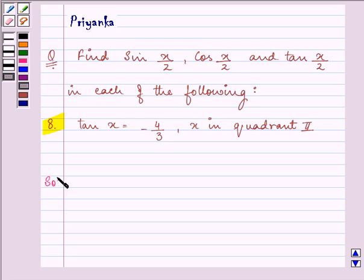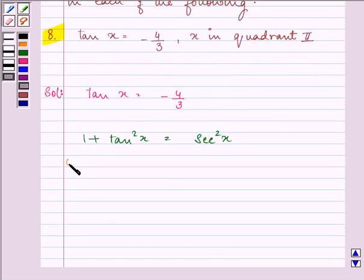Let us start with our solution. Here we are given the value of tan x as minus 4/3. We know that 1 plus tan squared x is equal to sec squared x. So we can find the value by substituting minus 4/3 in here. We can get the value of sec squared x.